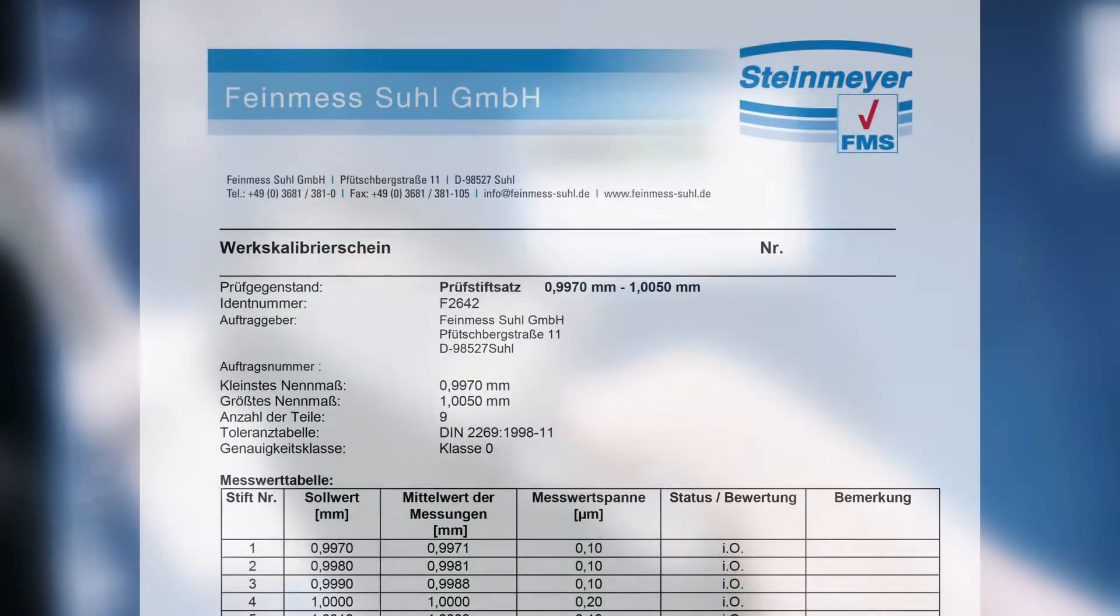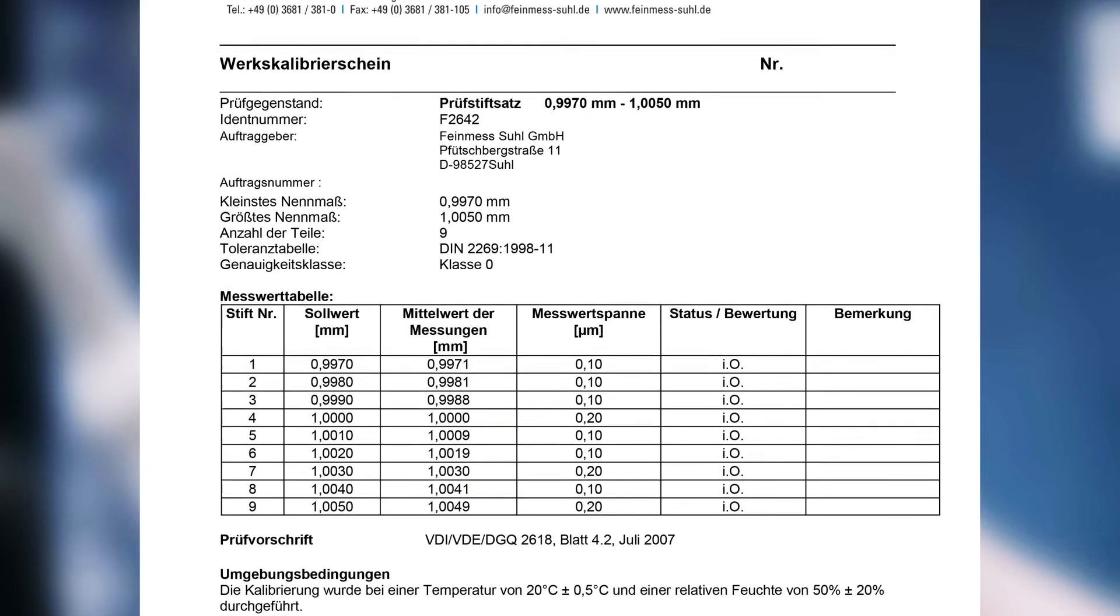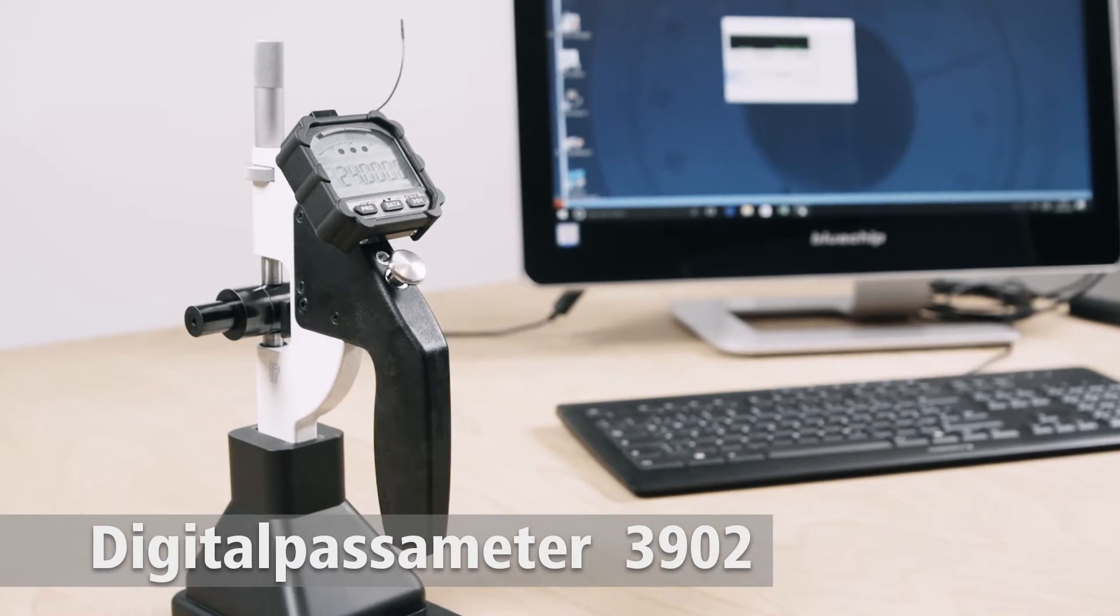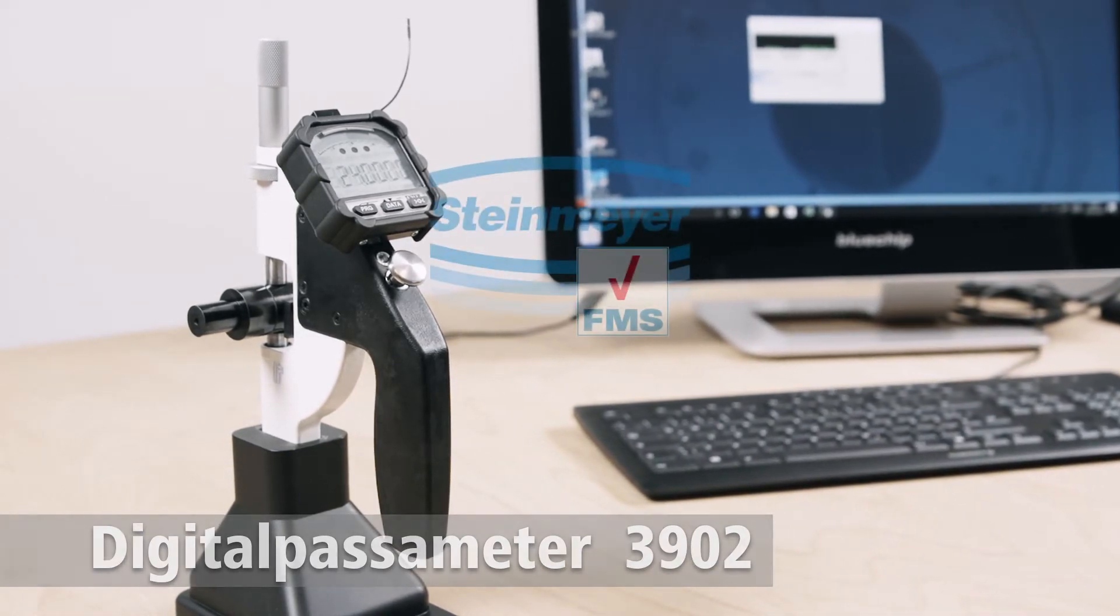The FMS View software allows uncomplicated generation and storage of test logs. The Digital Passameter 3902 from Feinmess Suhl.